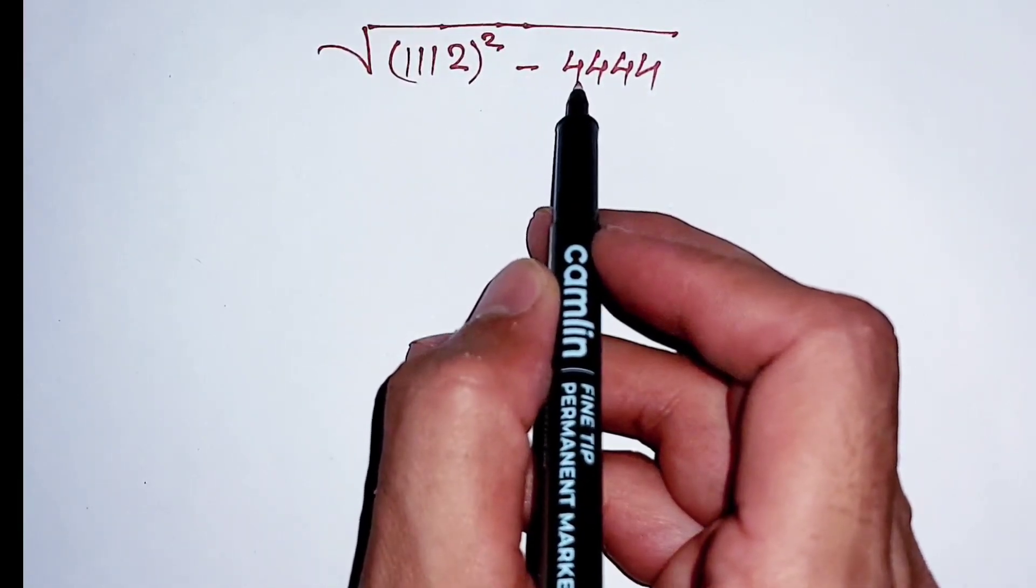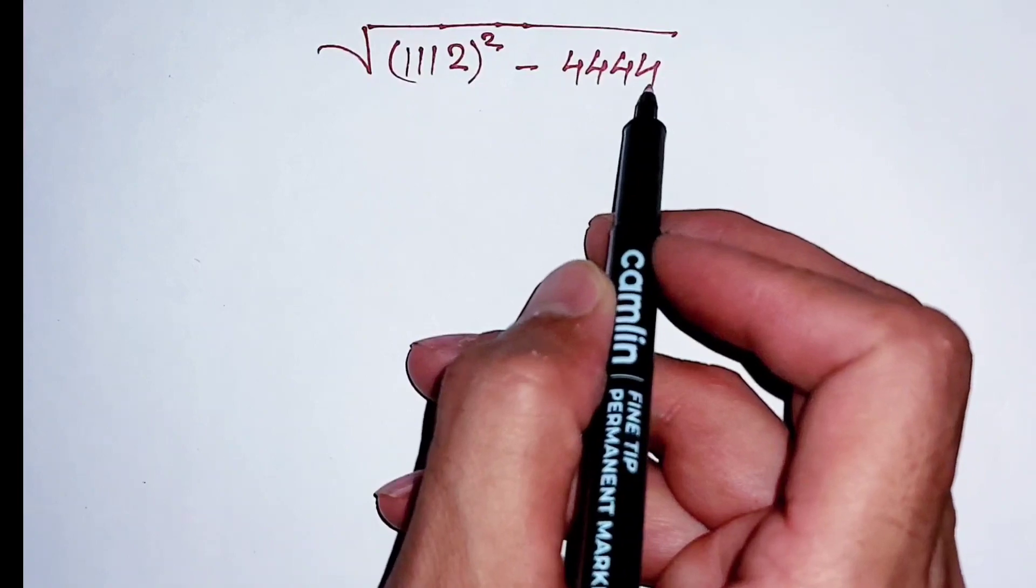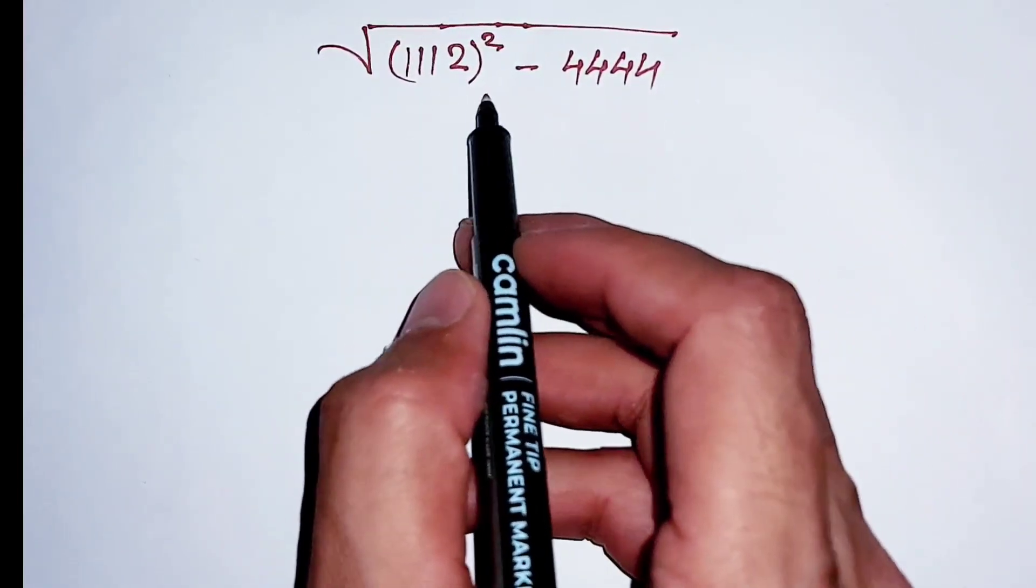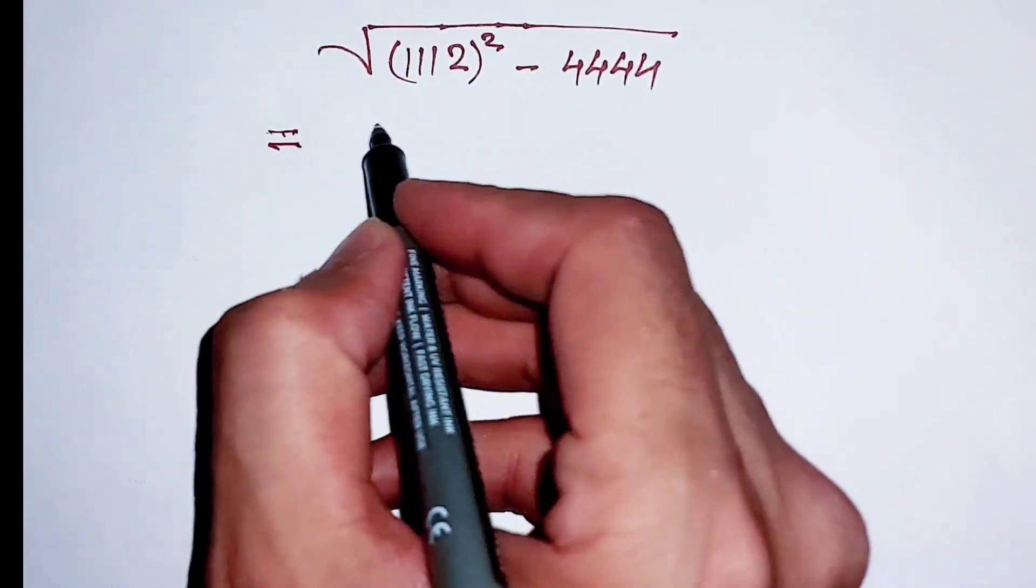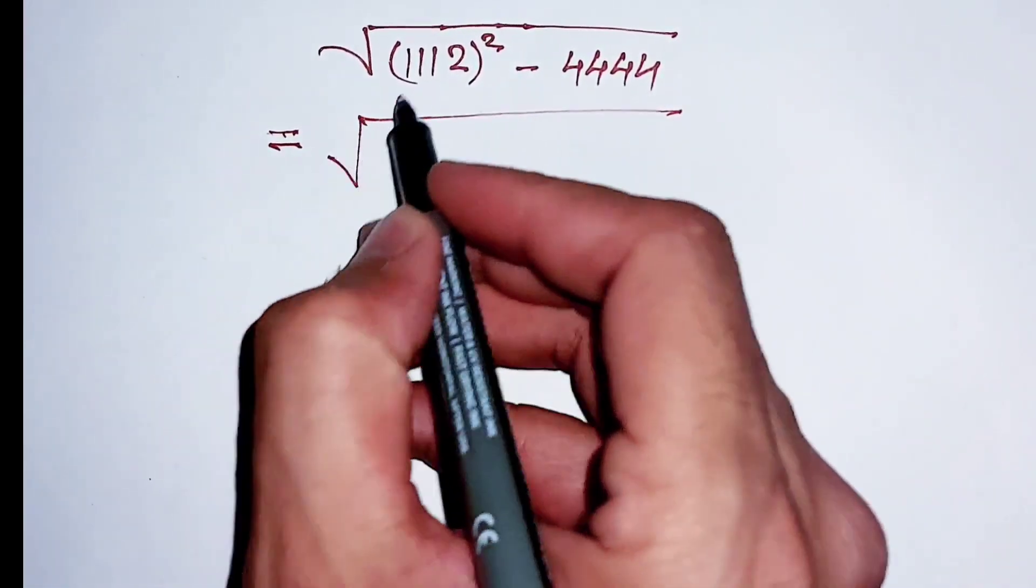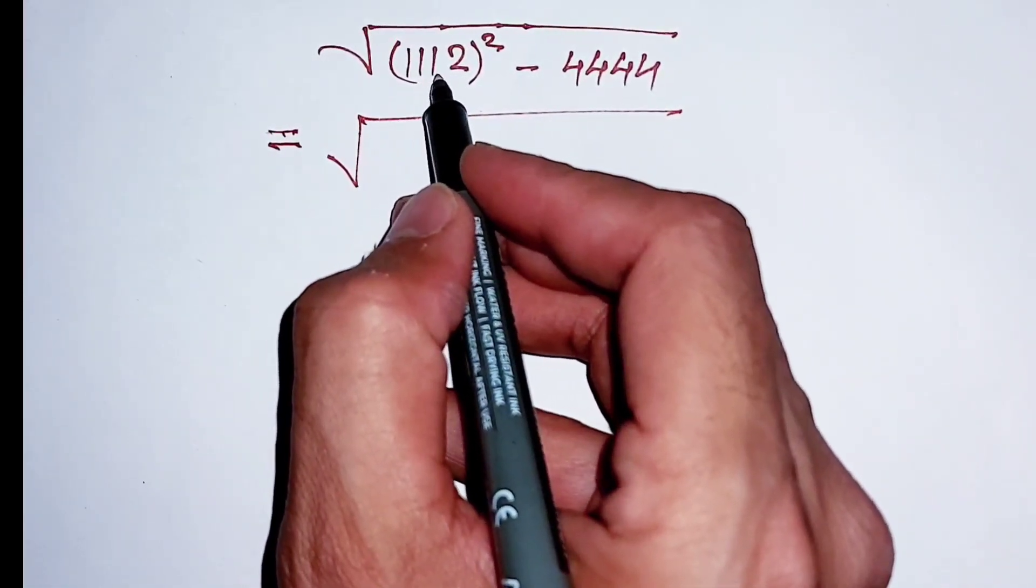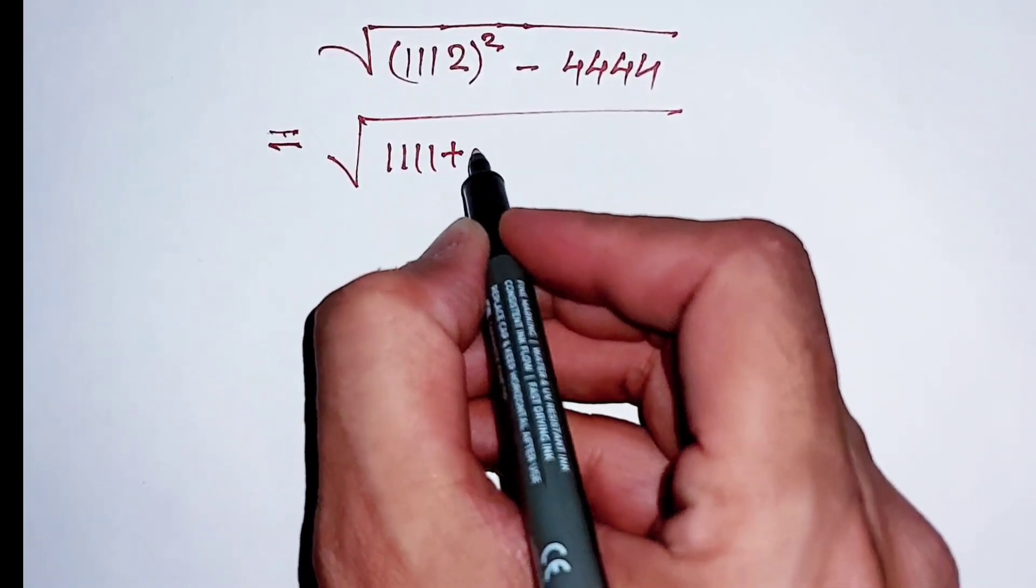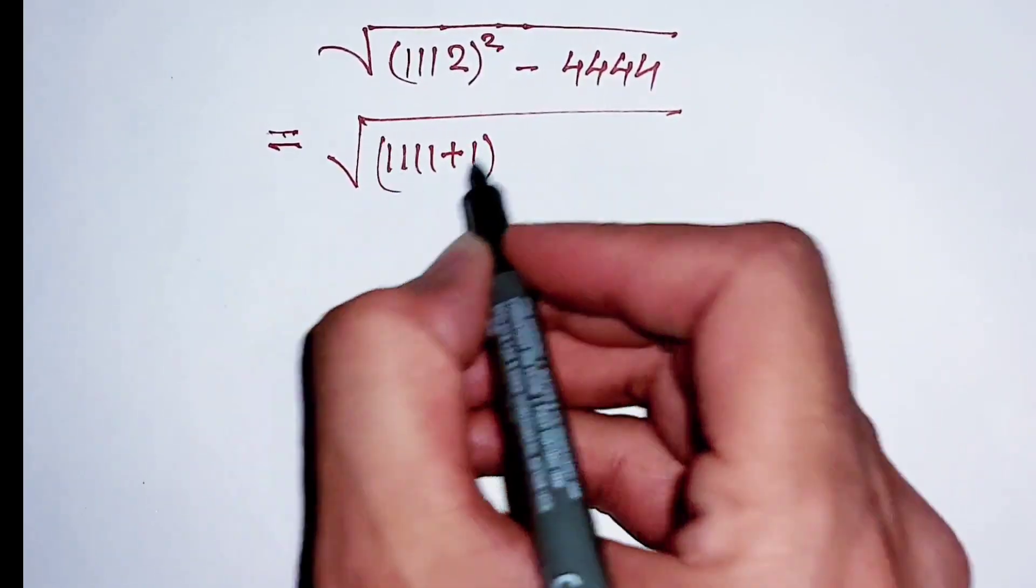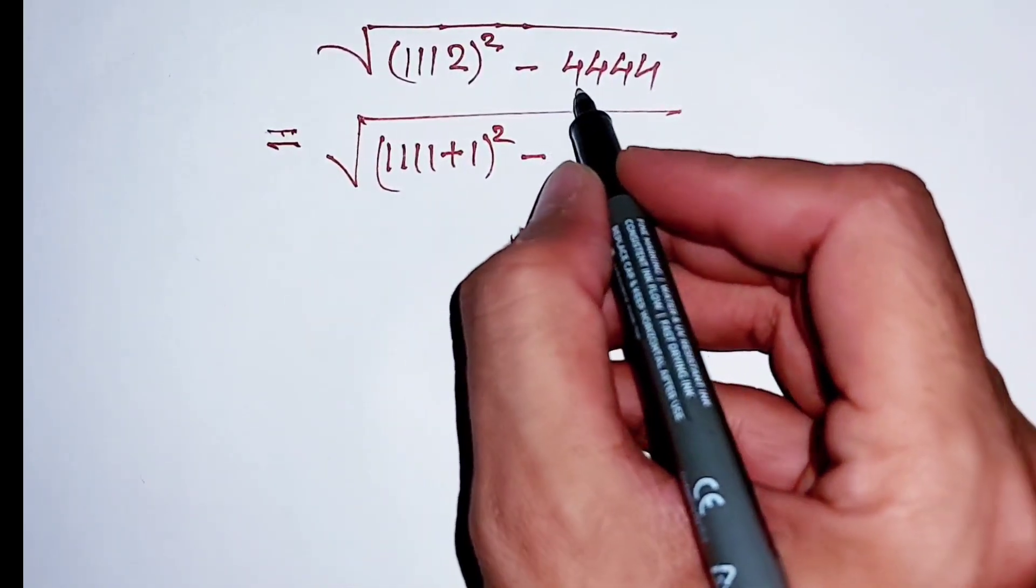We have to simplify the square root of 1112 squared minus 4444. First of all, this 1112 is the same as 1111 plus 1, squared, minus 4444.